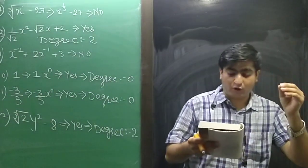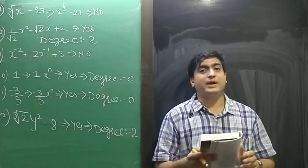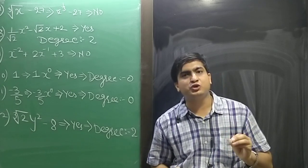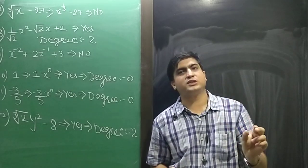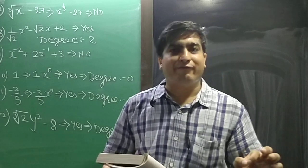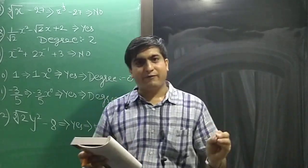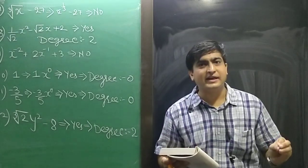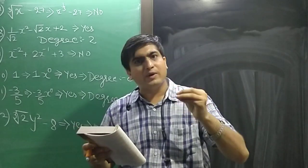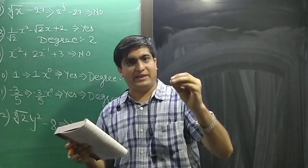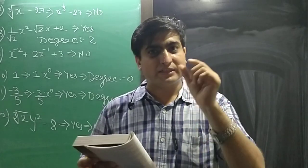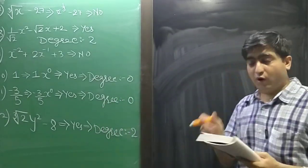Now major sum number 3: write the coefficient of x cubed in each expression. The coefficient means whatever constant term — including its sign — is attached to the variable term being asked about. So if x cubed is asked, the number multiplying x cubed (with its sign) is your coefficient.